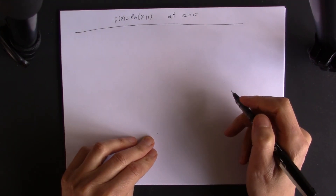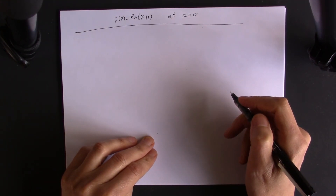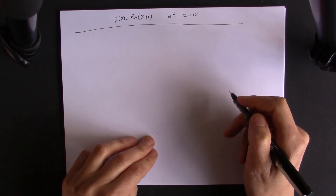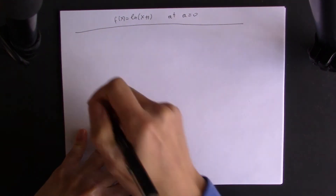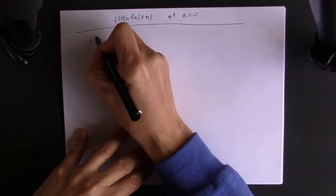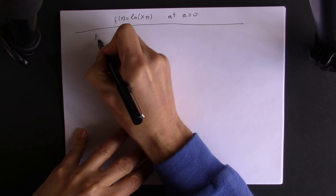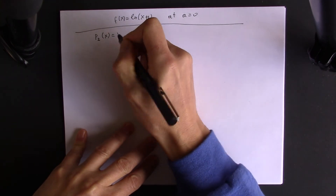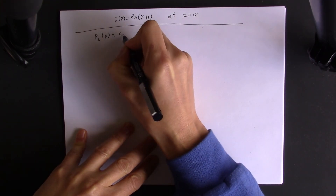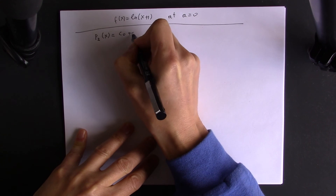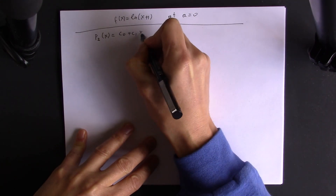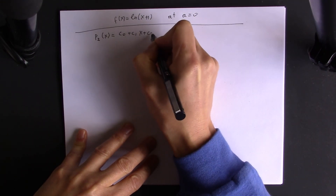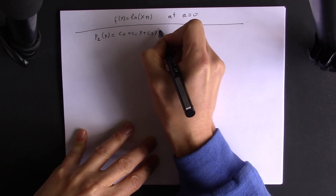Now we want to do a better approximation. Instead of approximating by a straight line, we will try to approximate by a parabolic or quadratic function. We try to approximate by p2(x) which is c0 plus c1*x plus c2*x squared.